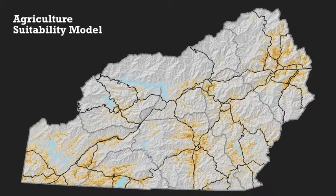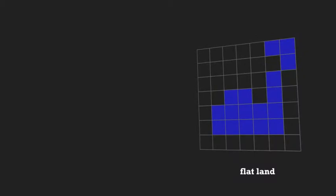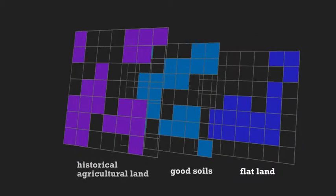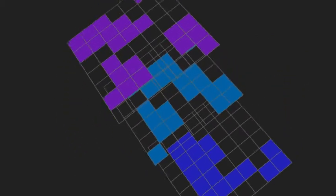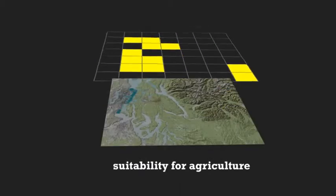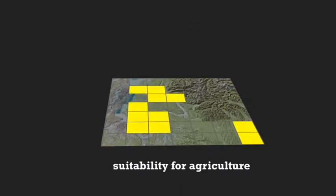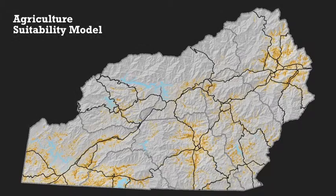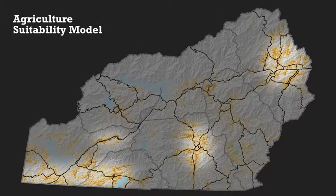This is a suitability map showing land suitable for agriculture in the Optin region. The Optin analysts decided that flat land, good soils, and lands that have been historically used for agricultural purposes would make an area suitable for agriculture. When all of these factors are put together, you can see which lands in the region are most suitable for agriculture.